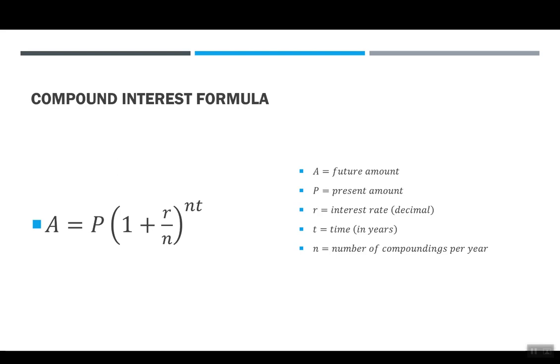Just like before, A is the future amount, P is the present amount we invest, R is the interest rate that we're still going to write as a decimal, and T will be the time, and we always write time in years. The new thing here is N. N is the number of compoundings per year. So in the last example, we just did annually, but I'm going to show you other examples where the compoundings are more frequent.